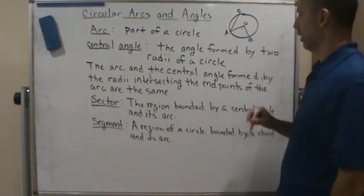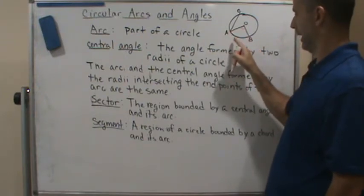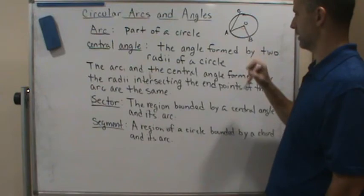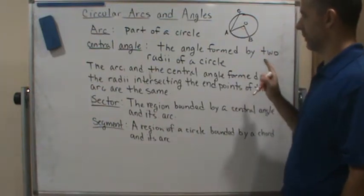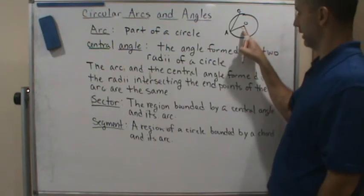Now the arc AB is the piece of the circle bounded by A and B, these line segments here. This here is an arc.